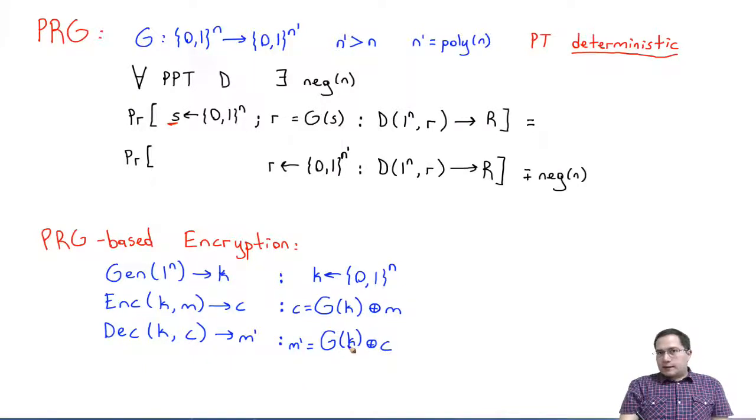The next thing we are going to prove is the following. Our theorem would be: if G is a secure PRG, then this encryption scheme here, and we forgot to define the message space. What will be the message space here? As you can guess, it is all N-prime bit messages. Remember, G of K will be an N-prime bit value.